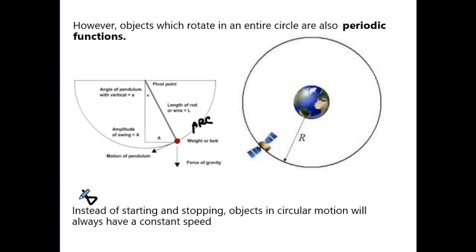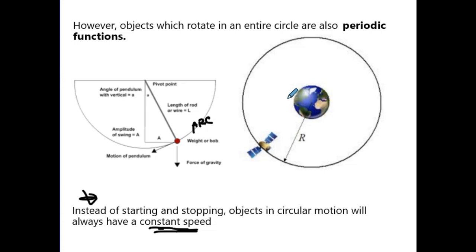Here's the big note: rather than starting and stopping, objects in circular motion should have a constant speed because they're constantly moving. If they didn't have a constant speed, they'd either stop, slow down, speed up, or go another direction.